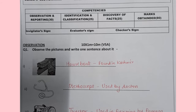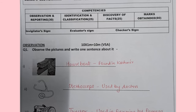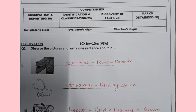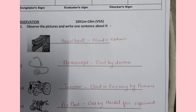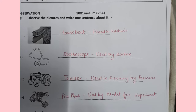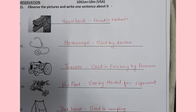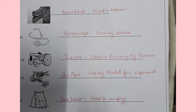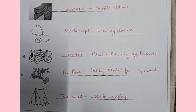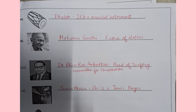The first picture is of a houseboat — you should write: it is found in Kashmir. Next one is a stethoscope used by doctors. It is a tractor used in farming by farmers. It is a pea plant used by Mendel for his experiment. This is a tent house used in camping. This is a dholak, a musical instrument.